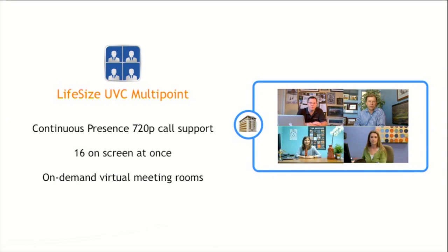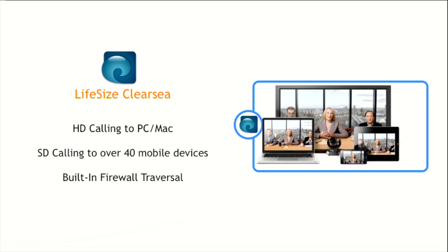Start out with as few or as many ports as you like. The best part is you're not locked into a monolithic box that does one thing — and if you want to upgrade, you don't have to forklift it out. This can be added on as you see fit and as you grow. Rounding out the UC options from LifeSize is the mobile calling solution, ClearSea, which allows you to bring HD video calling to your PC or Mac, and bring in over 40 different devices, with built-in firewall traversal.